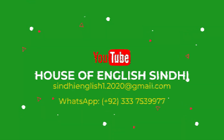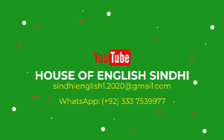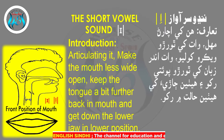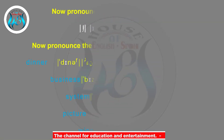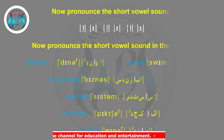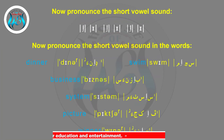The short vowel sound /ɪ/: articulating it, make the mouth less wide open, keep the tongue a bit further back in the mouth, and bring down the lower jaw into a lower position. Now pronounce the short vowel sound: eh, eh.